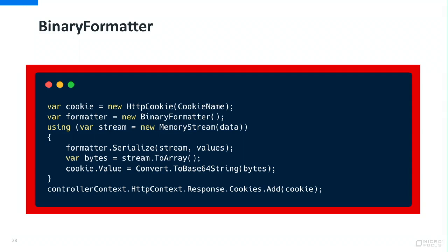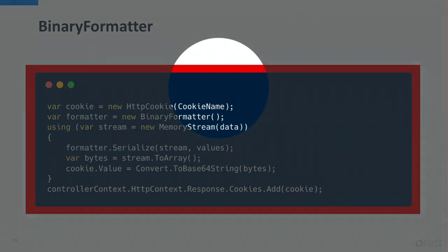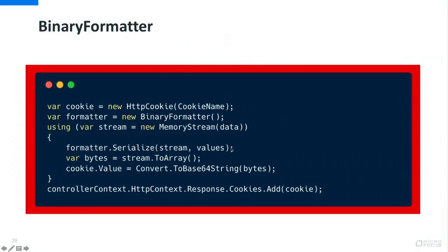If that cookie comes back, the server is going to deserialize it, and since there is no HMAC verification, it will run arbitrary commands using these gadgets. The first time I found that was in AppHarbor — browsing the site, I realized they were setting a cookie with the AAEAAAD magic number, which is the magic number for binary formatter base64-encoded, meaning the site — which is basically Heroku for .NET applications — was vulnerable to remote code execution.